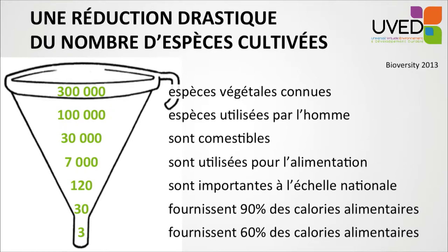Among those 120, only 30 provide 90% of the calories produced in the world. This is a highly specialized activity based on several very important species — and three species, wheat, rice, and maize, account for 60% of the calories produced across the world every year.